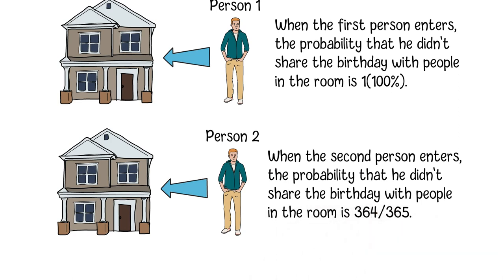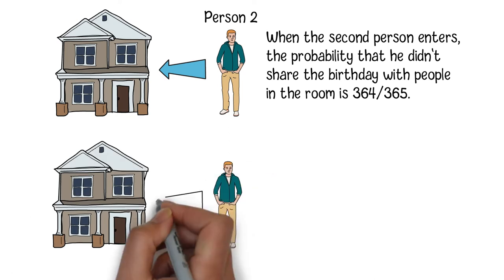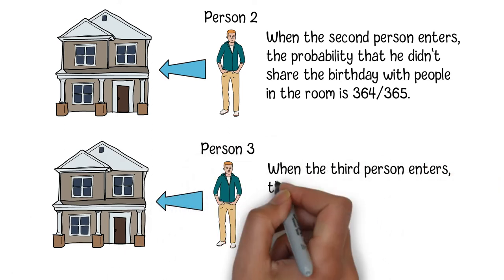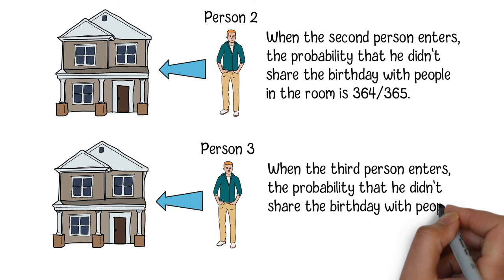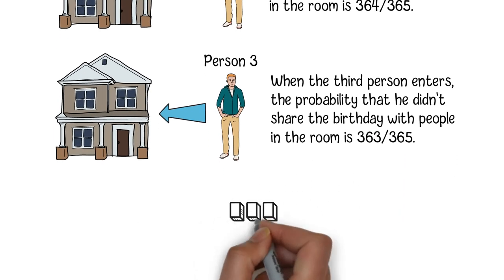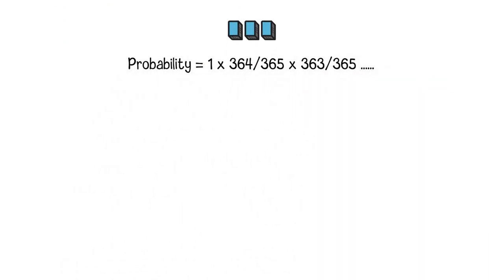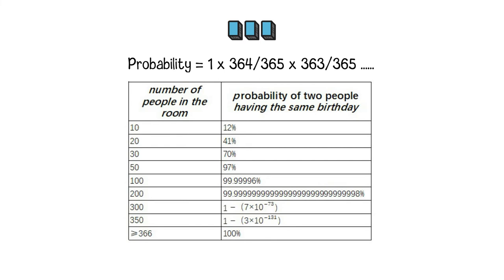Similarly, when person 3 enters the room, his probability of not sharing a birthday with other people is 363 over 365, and so on. If we multiply those probabilities together, we can calculate the final probability that no people in the room share the birthday with another in this room.